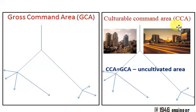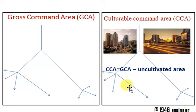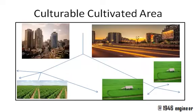Within the Gross Command Area, some parts of the area are occupied by buildings, roads, etc. The remaining part which can be cultivated is called the Cultural Command Area. This can be determined by the corresponding equation.